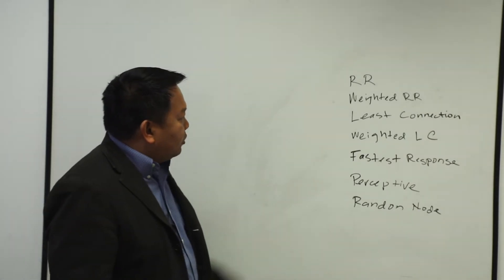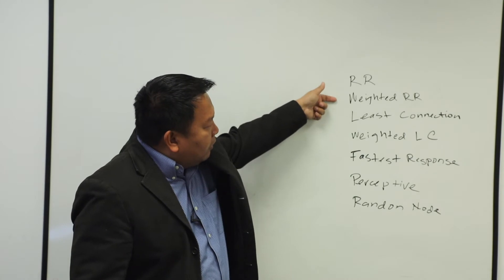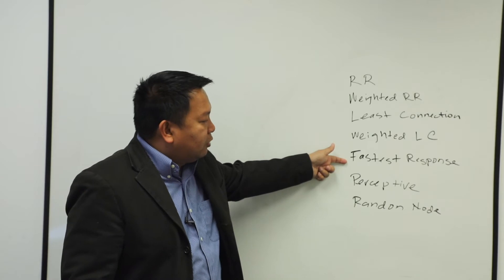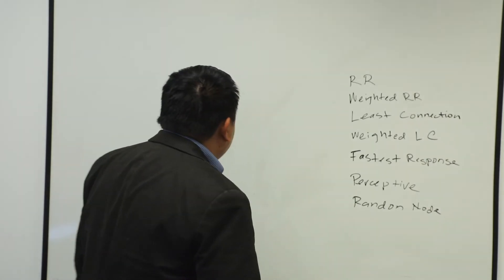So, those are the seven different algorithms that we have: round robin, weighted round robin, least connection, weighted least connection, fastest response time algorithm, perceptive, and random node.